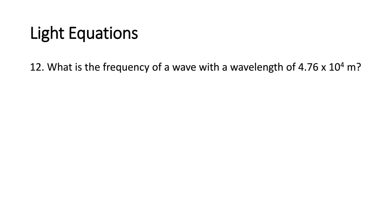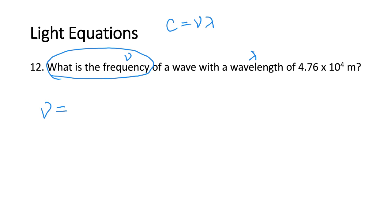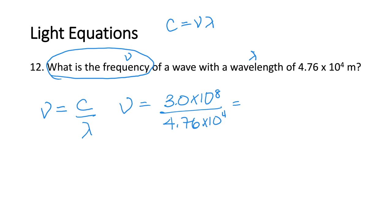Now we're going to do the light equations. What is the frequency of a wave with a wavelength of 4.76 × 10⁴ meters? There's only one equation that deals with frequency and wavelength. If we solve for frequency, we move the wavelength under C: ν = C/λ. So ν = 3.0 × 10⁸ divided by 4.76 × 10⁴.